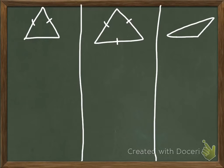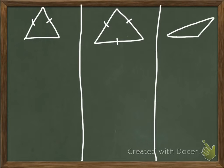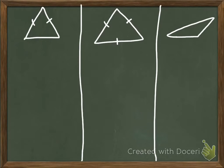We're going to begin our classifications by classifying by sides. There are three classifications for sides: equilateral, isosceles, and scalene. Now we have three triangles here — one is equilateral, one is isosceles, and one is scalene. Pause the video and with your group decide which is which, and come up with an idea of why you think they're classified that way.